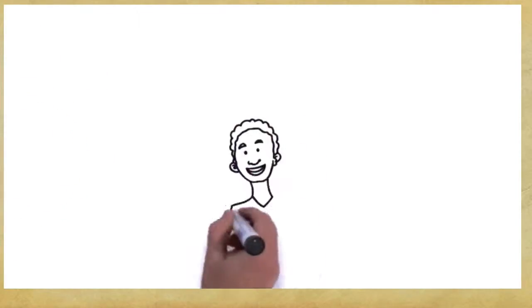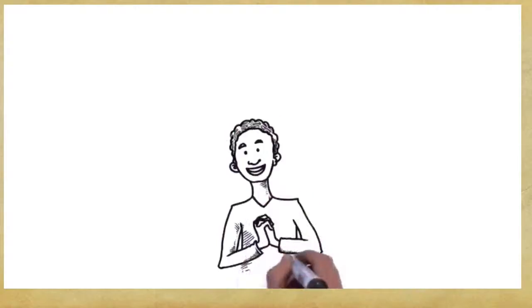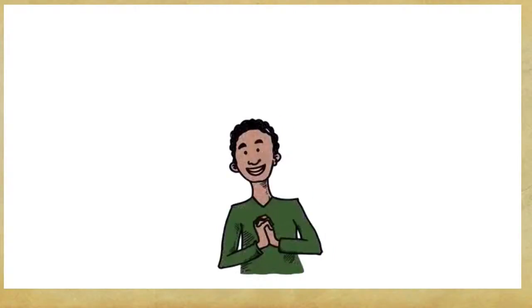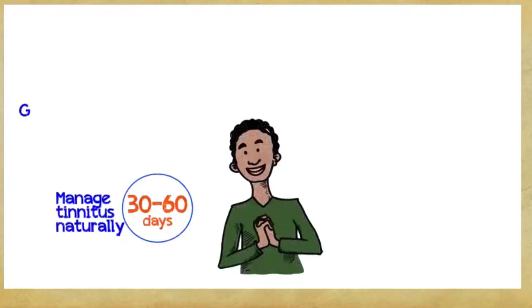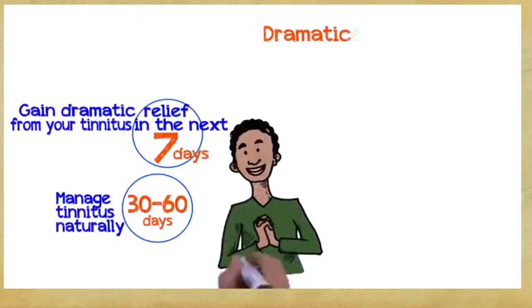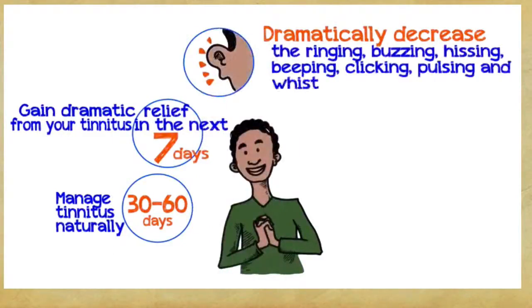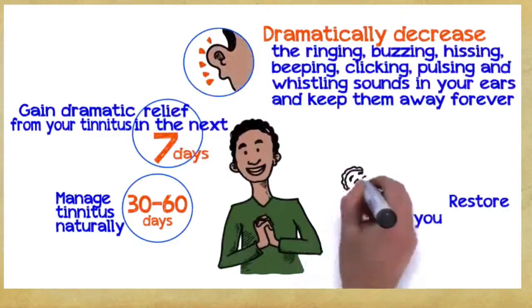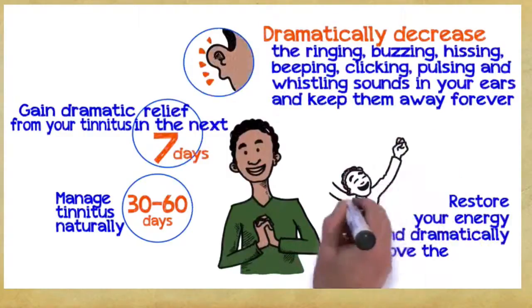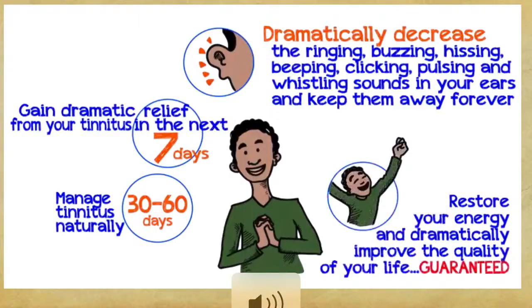So, what can you gain if you embrace these three easy principles? Well, you can manage tinnitus naturally within 30 to 60 days. Gain dramatic relief from your tinnitus within the next seven days. Dramatically decrease the ringing, buzzing, hissing, beeping, clicking, pulsing, and whistling sounds in your ears and keep them away forever. Restore your energy and dramatically improve the quality of your life, guaranteed.